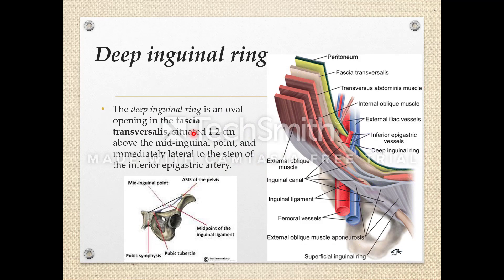The deep inguinal ring — what is it? Looking at the layers of the anterior abdominal wall: the external oblique muscle and its aponeurosis, the internal oblique muscle and its aponeurosis, the transversus abdominis muscle, the fascia transversalis, the extraperitoneal connective tissue, and the parietal peritoneum. The deep inguinal ring is an oval opening in the fascia transversalis. It is about 1.2 centimeters above the mid-inguinal point.